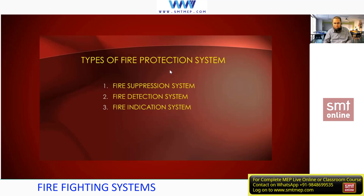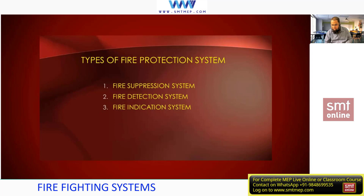The next category is the fire detection system — the system used to detect the fire. Examples include smoke detectors, heat detectors, beam detectors, and flame detectors, including addressable systems. The system used only to detect fire falls under the detection system. Next, we have the fire indication system, which is used to indicate the fire — the best example is the alarm. Alarms and different types of alarm systems come under the indication system.